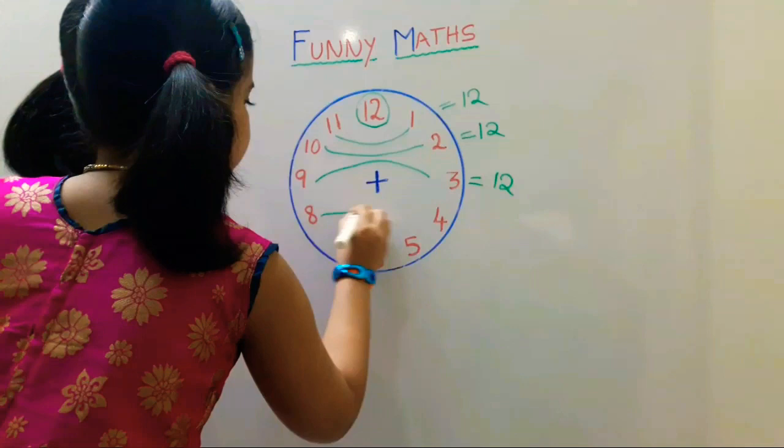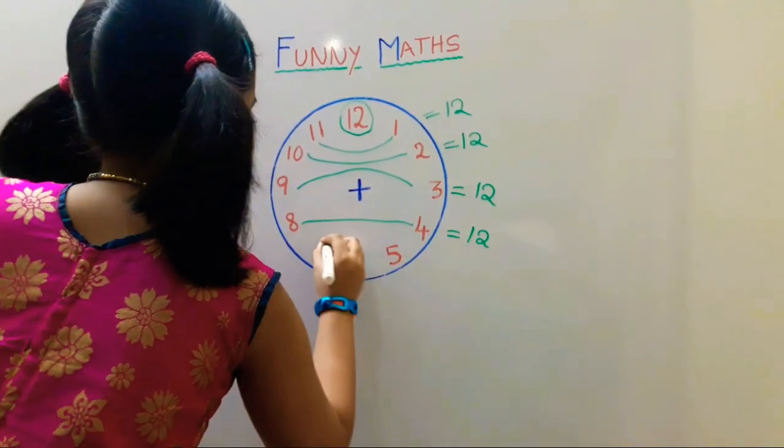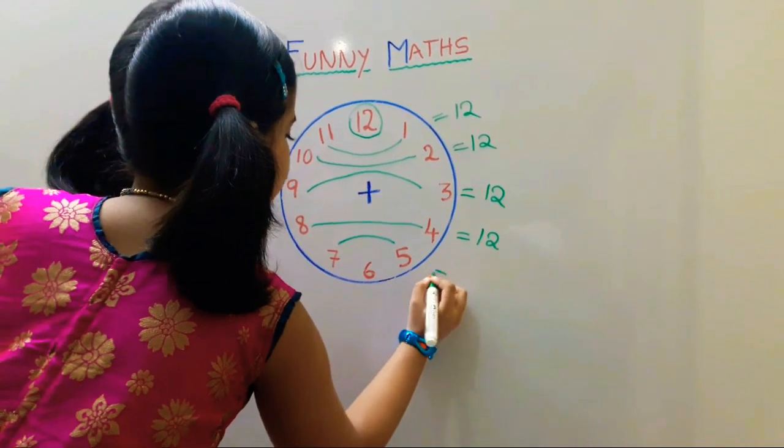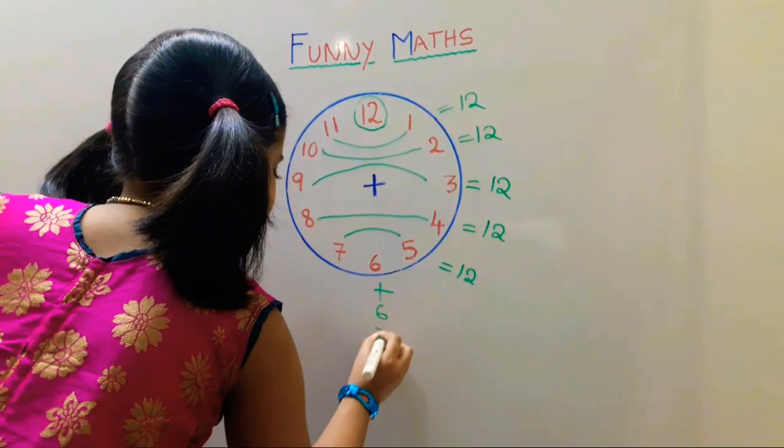8 plus 4 is equal to 12. 7 plus 5 is equal to 12. 6 plus 6 is equal to 12.